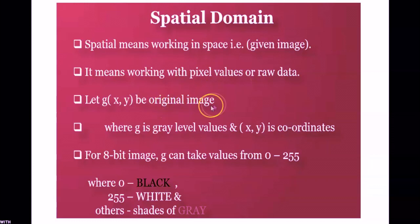For example here, the original image is indicated by G, where G is gray level values and (x, y) is coordinates. For example, for an 8-bit image, G can take from the value 0 to 255. 0 means black, 255 means white and in between they are grey shades.